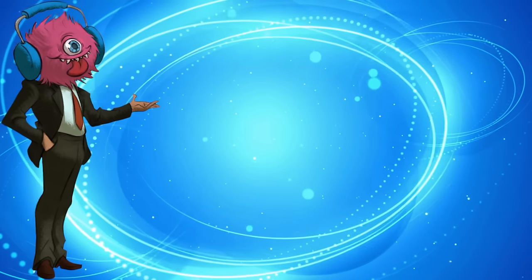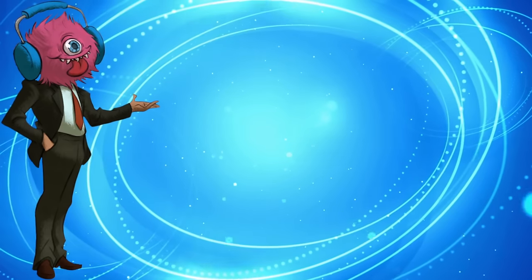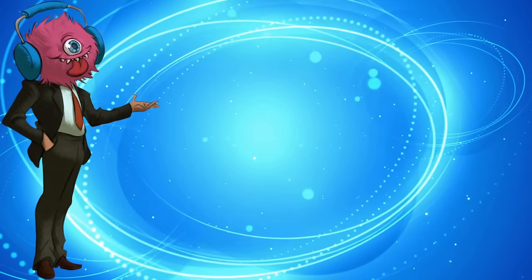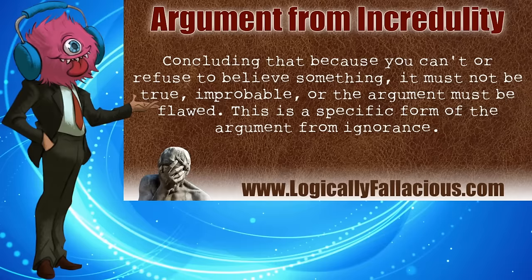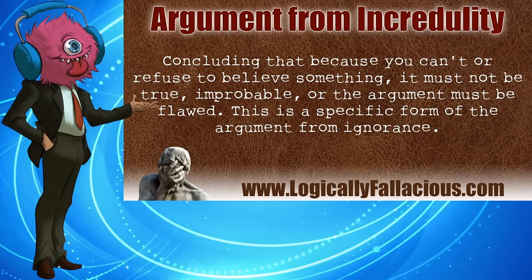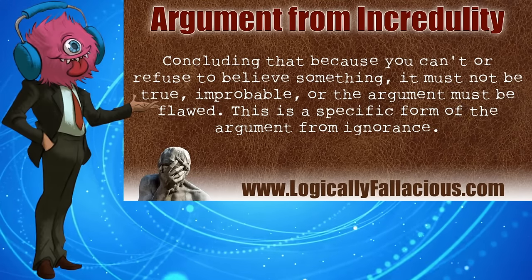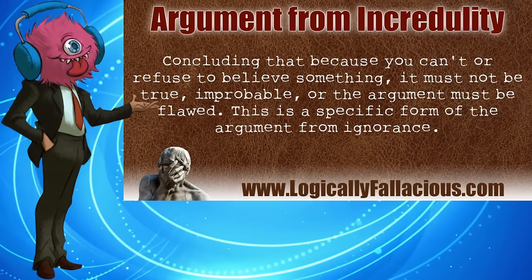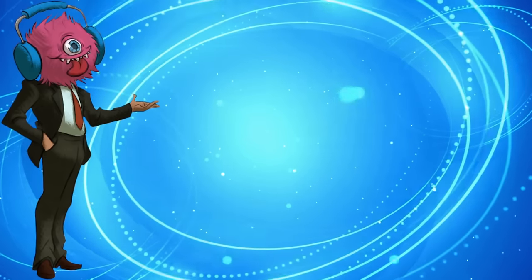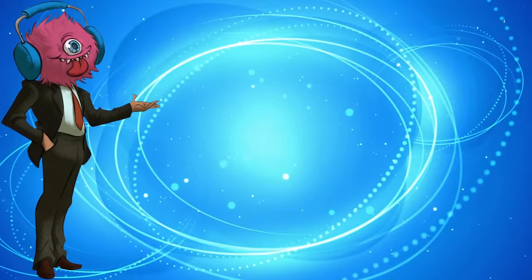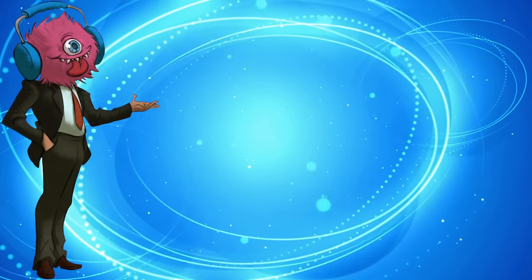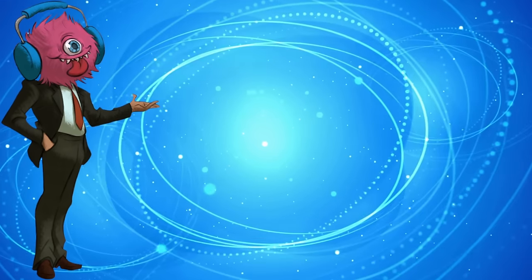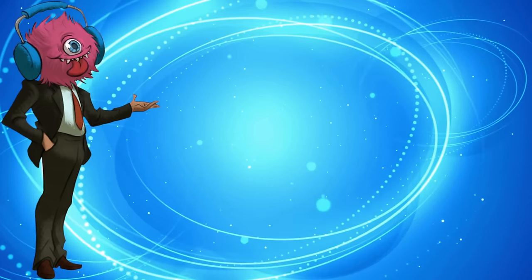Now, one could posit that the laws of physics being what they are are evidence of a creator god, and many have attempted that argument as well, because why do things work the way that they do if they weren't set that way by a god? But that is just a basic argument from incredulity, concluding that because you can't or refuse to believe something, it must not be true, improbable, or the argument must be flawed. This is a specific form of the argument from ignorance. Because you can't or won't accept that the laws of physics could be naturally occurring, you supplant the idea of a magical creator god instead, and think that your refusal to accept a naturalistic reason is an argument in and of itself in favor of your supernaturalistic reasoning. But it isn't.